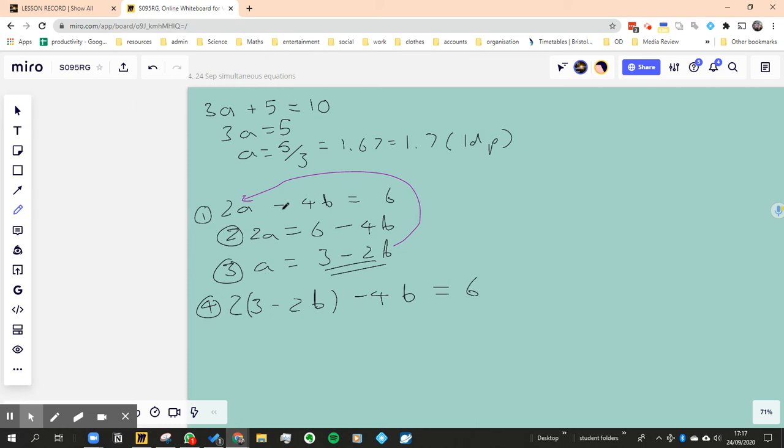I've made a mistake. What I did is I moved the 4b to the side. That should be a plus, and so therefore that should be a plus, which means that should be a plus. Okay, now try and take it to the next step.